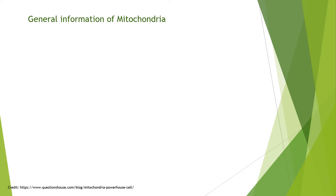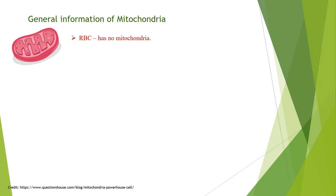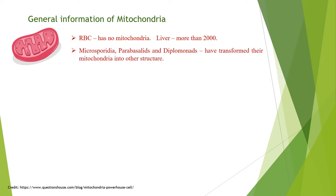In this slide, I will give you general information about the mitochondria. The number of mitochondria in a cell can vary widely by organism, tissue and cell type. A mature red blood cell has no mitochondria, whereas a liver cell can have more than 2000. A large number of unicellular organisms, such as microsporidia, parabasalates and diplomonads, have reduced or transformed their mitochondria into other structures.